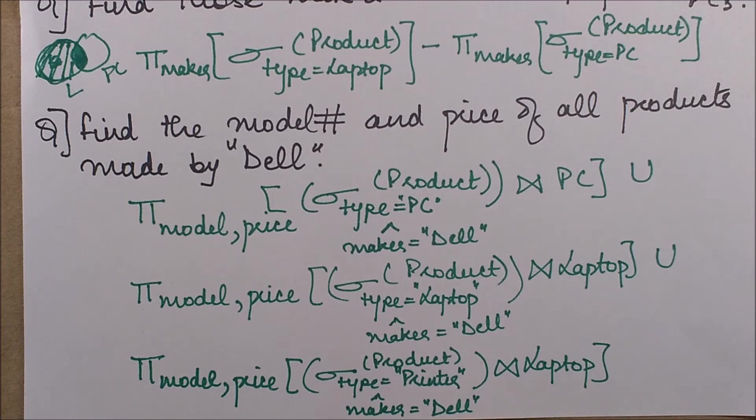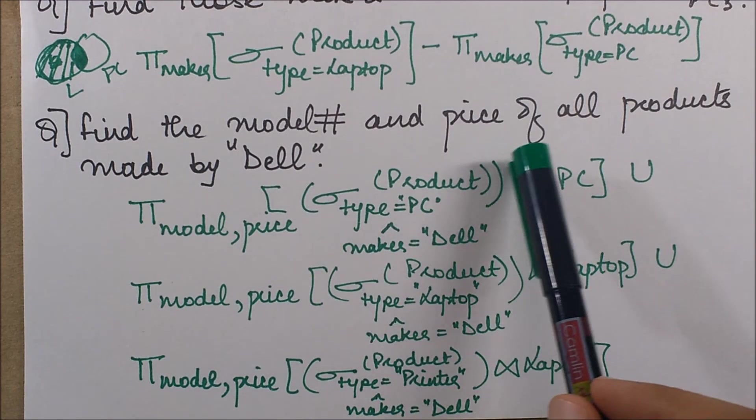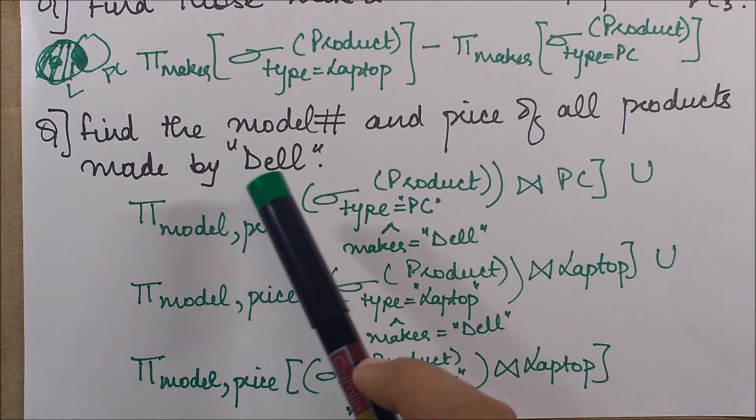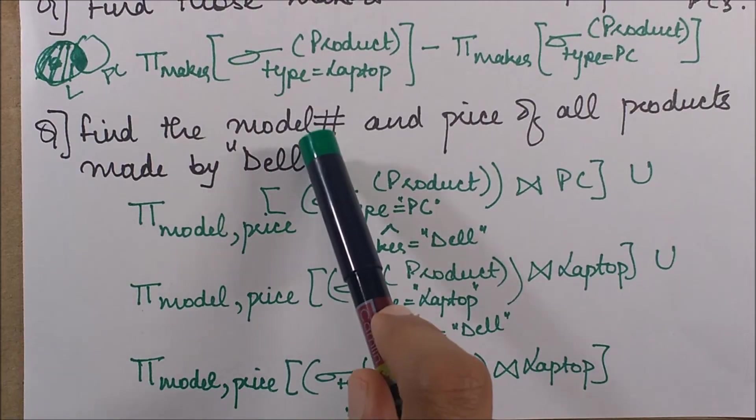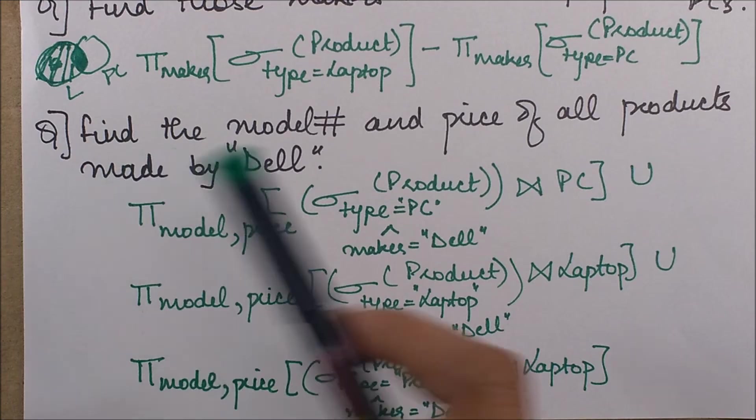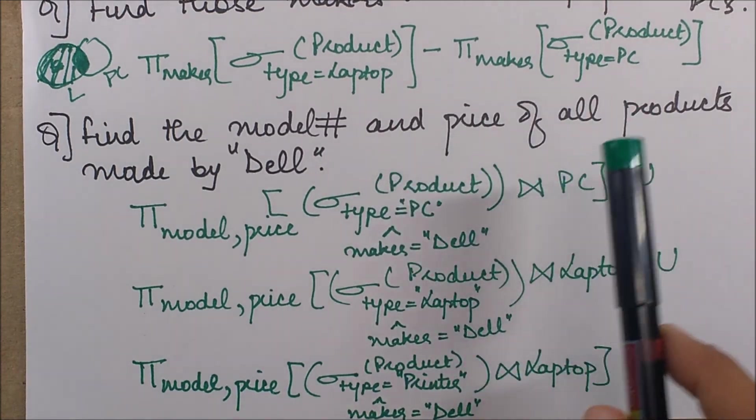In the next one, we have: find the model number and price of all the products made by Dell. First of all, we want the manufacturer as Dell, and then the model and the price of all the products.